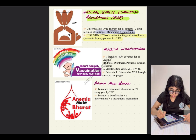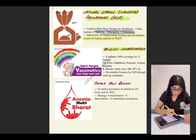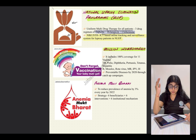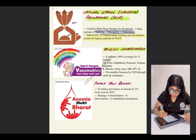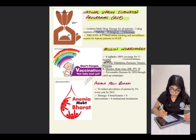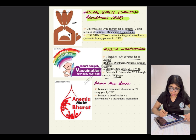Mission Indradhanush concludes 100% coverage for 11 vaccines: TB, polio, diphtheria, pertussis, tetanus, hepatitis B, measles, rotavirus, MR, IPV, and JE for vaccine-preventable diseases by 2020 through catch-up campaigns.